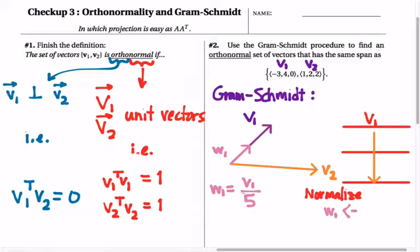Which would be negative 3 fifths, 4 fifths, 0. And you can check, you should check, that the set which consists only of the vector W1 is an orthonormal set. Because every distinct pair of vectors in this set is orthogonal. There is no distinct pair at all to speak of, so that's vacuously true. And every vector inside of this set is a unit vector, which you can check now that if I take the dot product of W1 with itself, we will get 1. So this is a one-vector orthonormal set that has the same span as the one-vector set consisting only of V1.